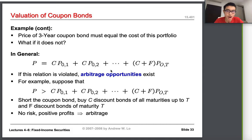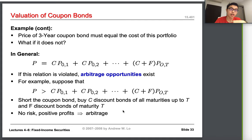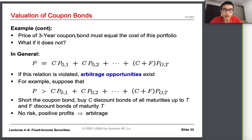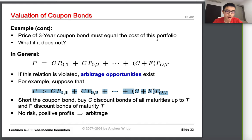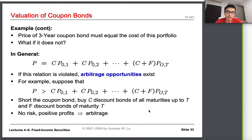To summarize: arbitrage is when you buy an identical asset in one place and sell it in another at a higher price, making a positive profit with no risk. Now, going back to the formula: the price of the three-year coupon bond must equal the cost of the portfolio of strips. If the price of the three-year bond is larger than the cost of the portfolio, you buy the right-hand side, sell the left-hand side, and take the arbitrage profit.